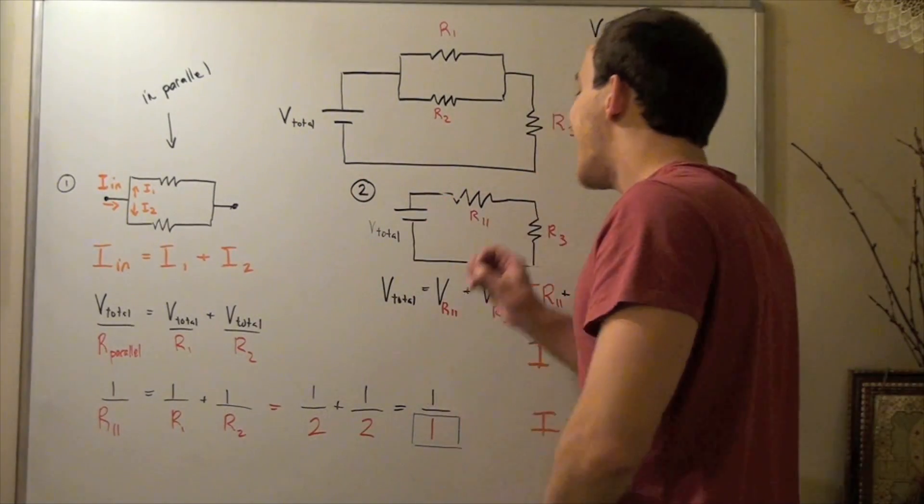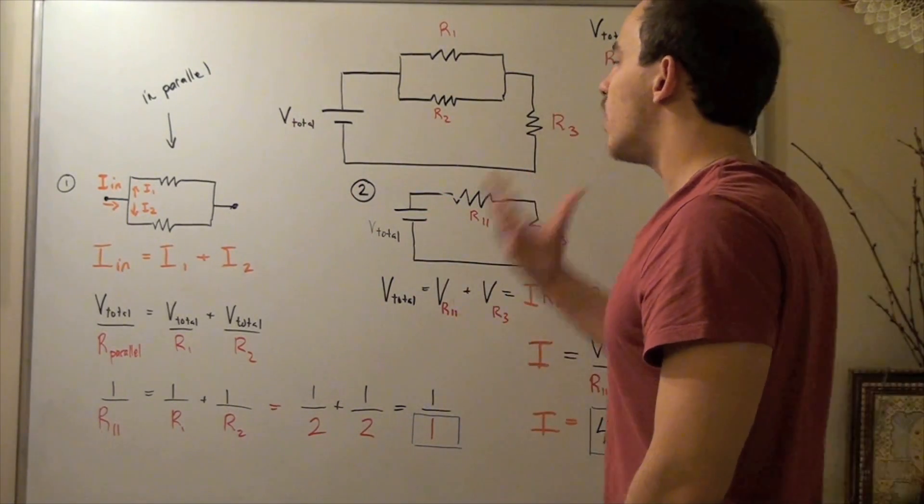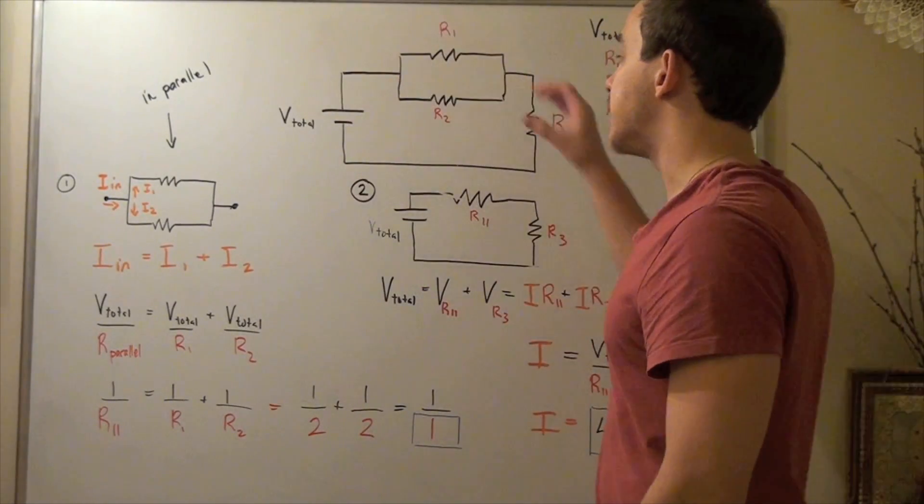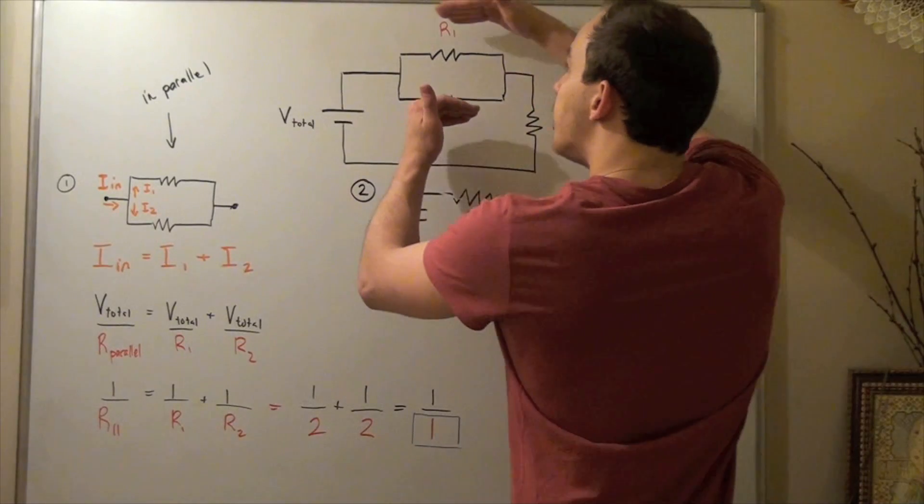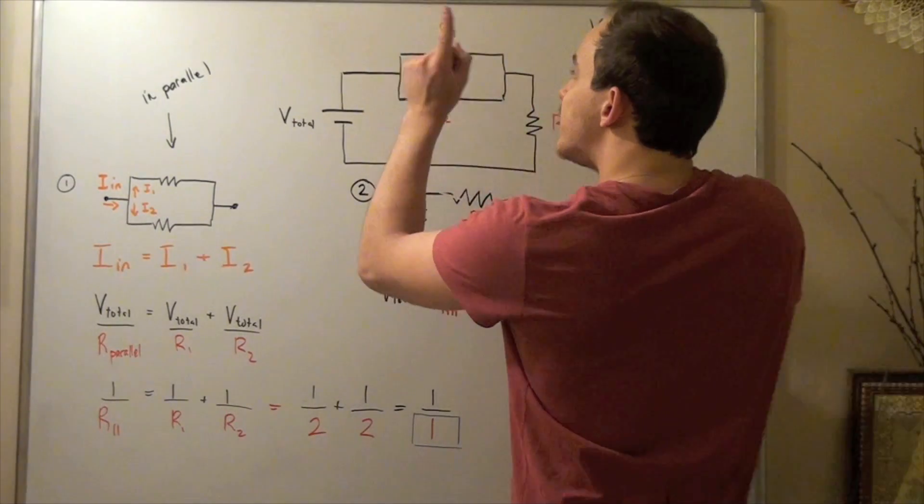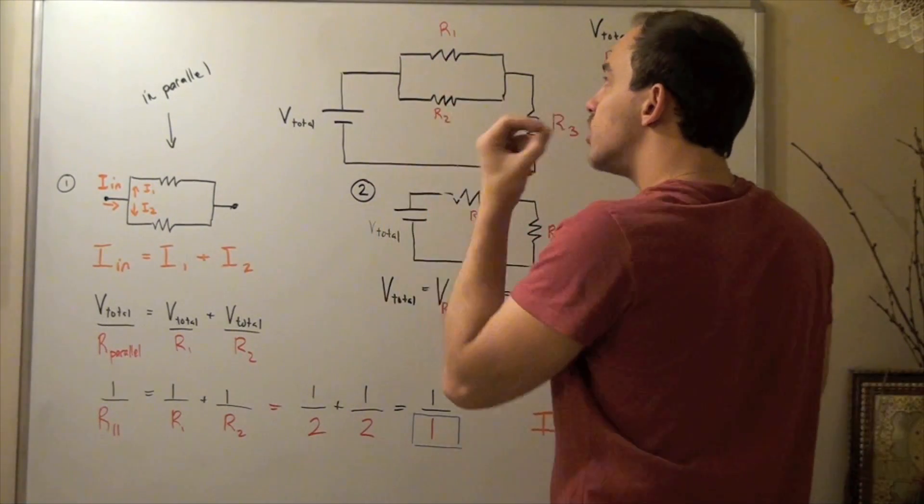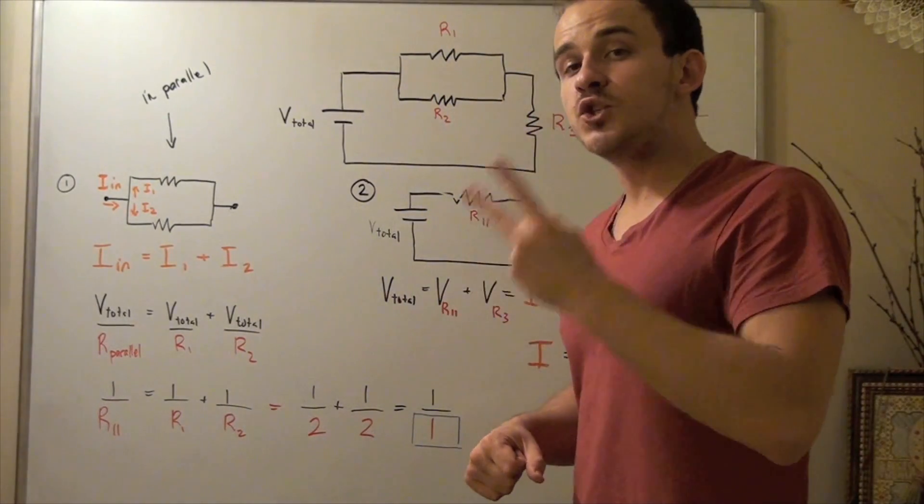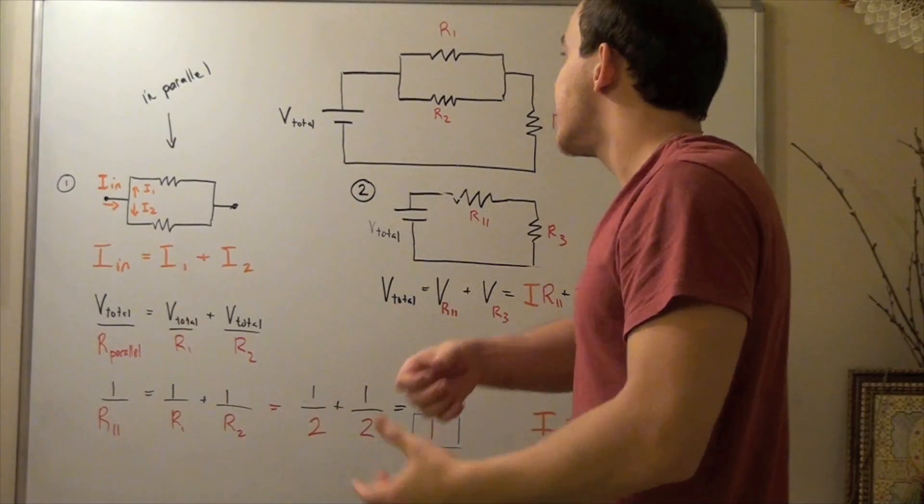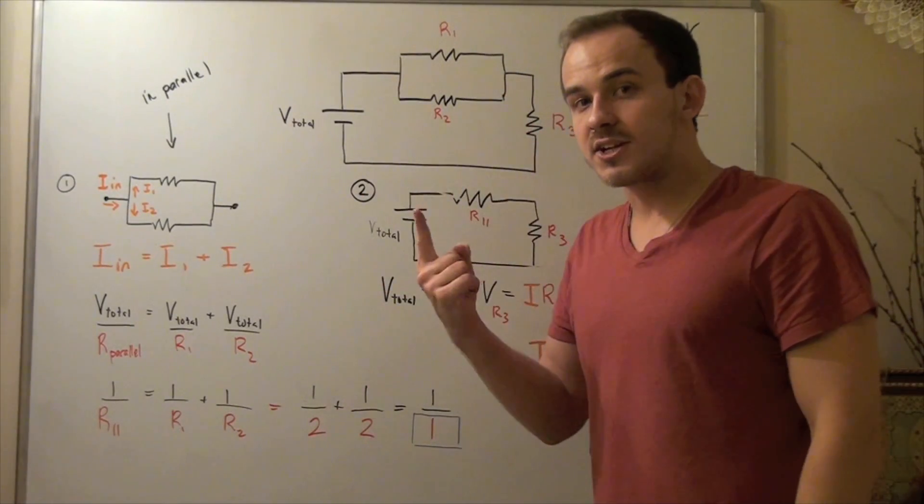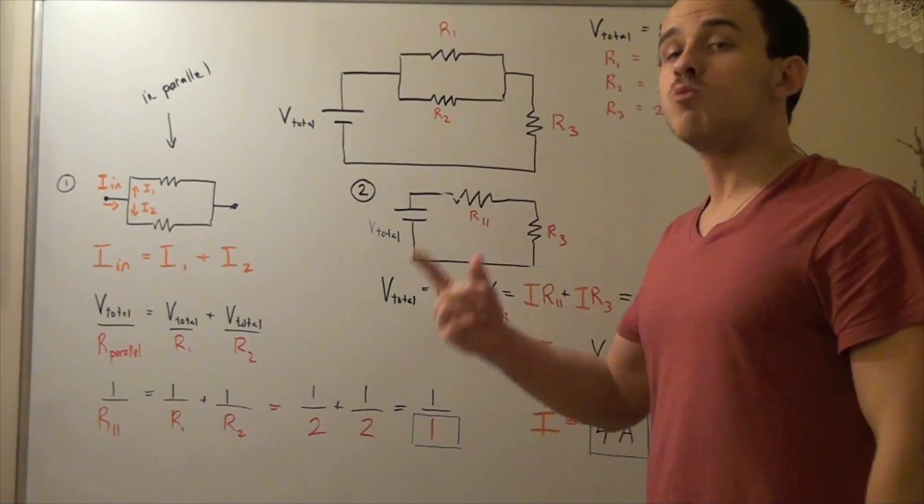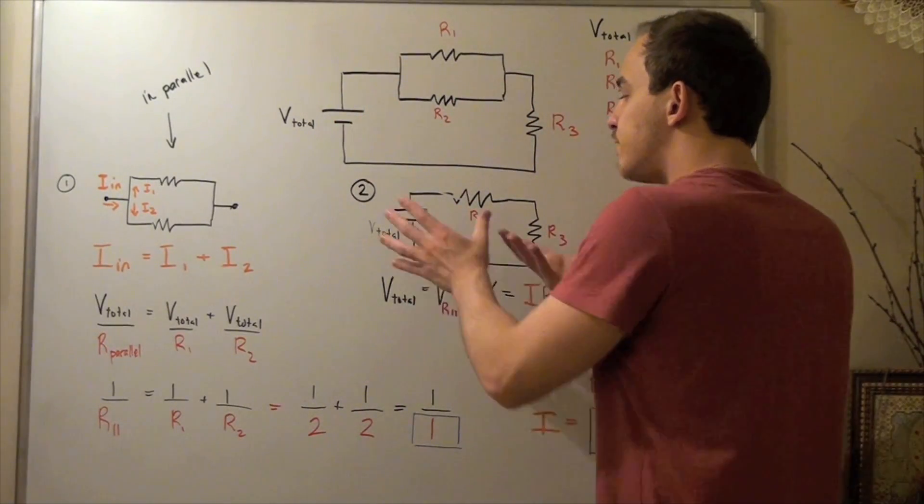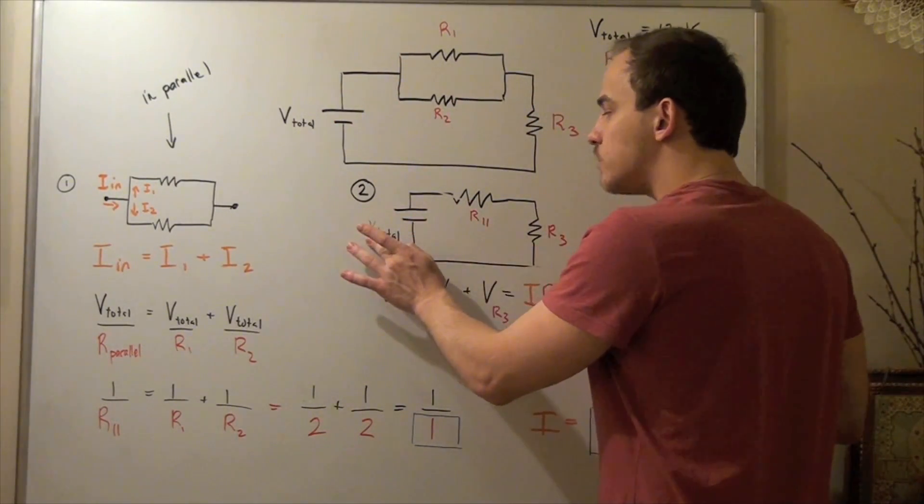Now we can jump into step 2. In step 2, we can redraw and relabel our circuit. Basically, what we did is we combined these two into a single resistor. Resistor 1 and resistor 2, each having a resistance of 2 ohms, combines to form a single resistor that has 1 ohm resistance. We redraw our circuit in the following manner.